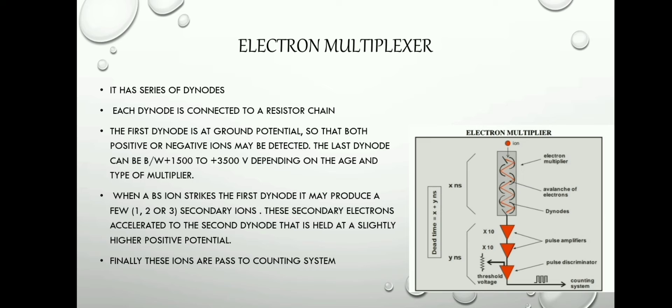First, about the electron multiplexer. It has a series of dynodes. Each dynode is connected to a resistor chain. As you can see in the diagram, the first dynode is at ground potential so that both positive or negative ions may be detected. The last dynode can be between +150V to +3500V depending on the age and type of multiplier.